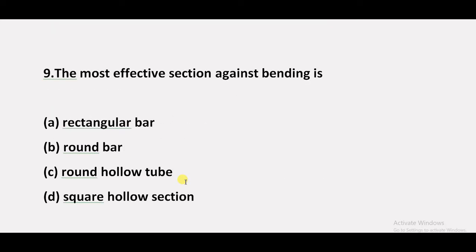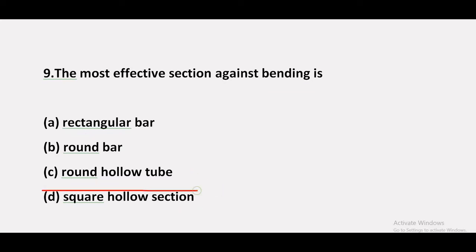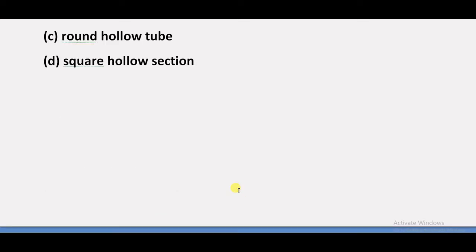Question 9: The most effective section is — option A: rectangular bar, option B: round bar, option C: round hollow tube, option D: square hollow section. The answer is D — square hollow section. The most effective section against bending is the square hollow section.